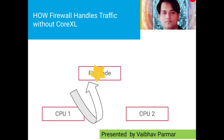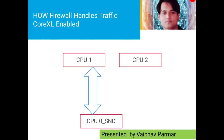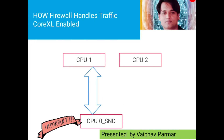This drawback is overcome when we enable Core XL. When Core XL is enabled, the key addition is the Secure Network Distributor, or Secure Network Dispatcher — we call it SND. The SND's role is processing incoming traffic from network interfaces and sending or assigning that traffic to the relevant kernel. Whenever a packet is received by SND, it processes the packet and has the ability to forward it to the relevant core.